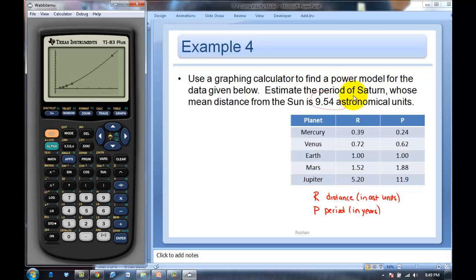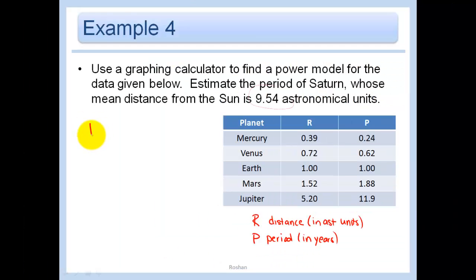And then it asks me, estimate the period of the sun. So find p, which is my y in this case, right, because I put this in x, I put this in y. So find y when x is 9.54. So I'm going to do my fancy way, second quit. I'm going to do y1. So go over to vars, y vars, function y1 of 9.54. So about 29.76 years. Again, I had y, which is p, is equal to, it was about 1 on my calculator, so I'm just going to not put anything there. And then I found that p of 9.54 was about equal to 29.76 years.